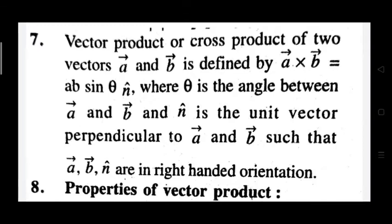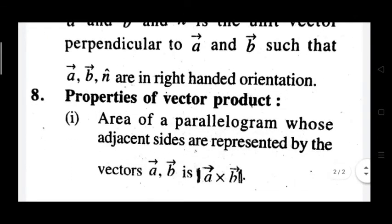The vector product or cross product of two vectors A and B is defined as A cross B equals ab sinθ n̂, where θ is the angle between vector A and vector B, and n̂ is the unit vector perpendicular to both vector A and vector B.